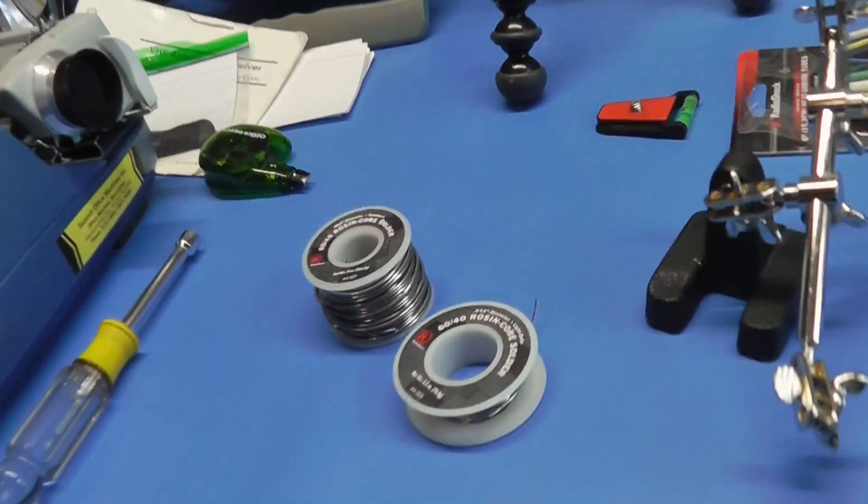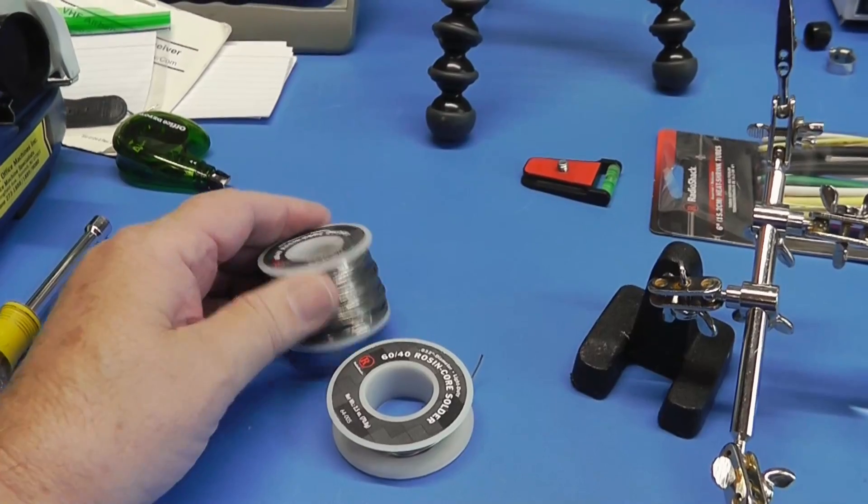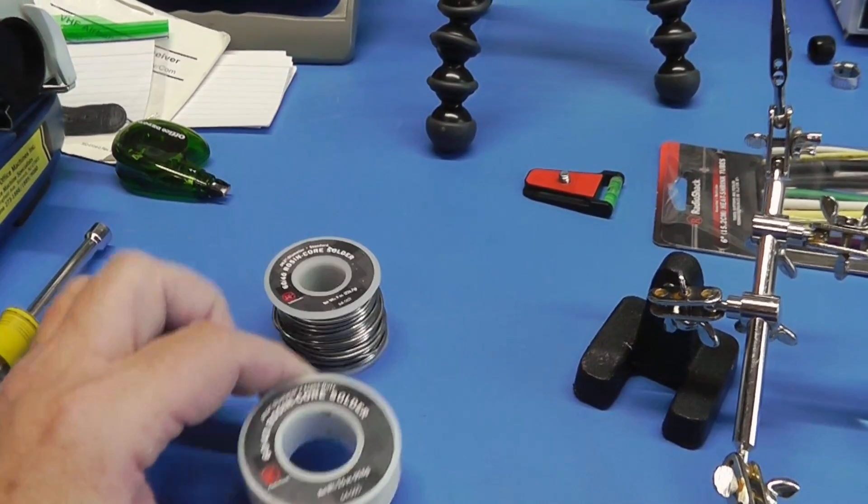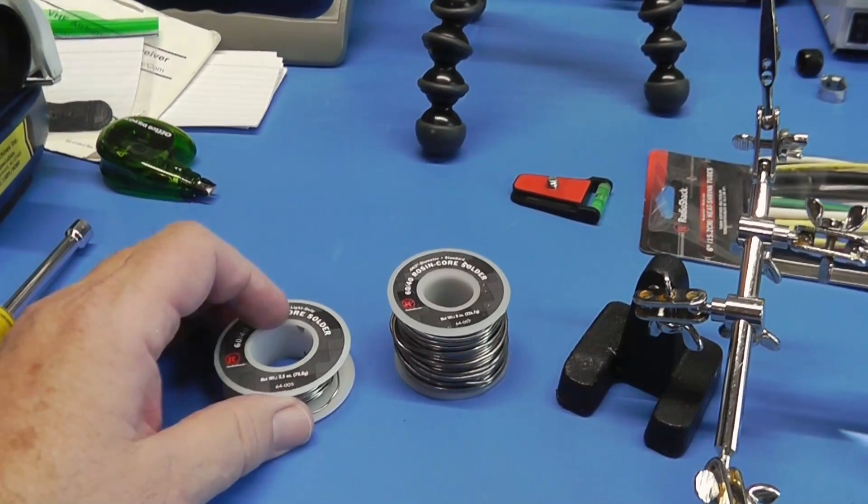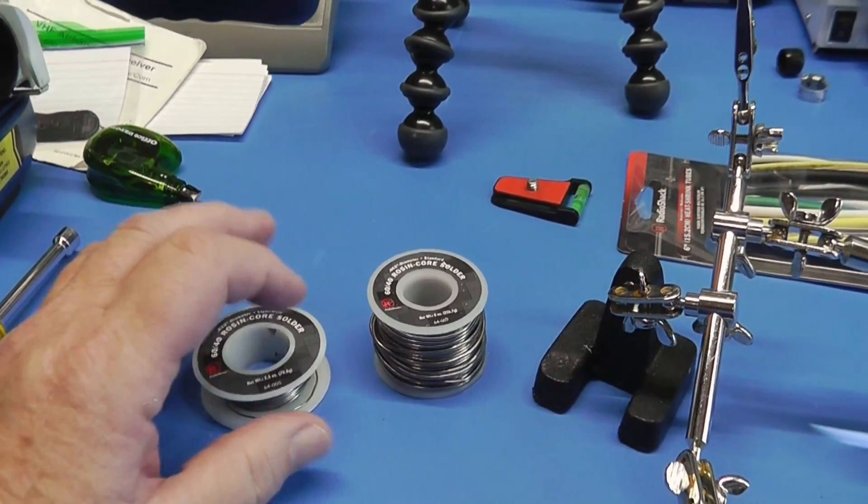Okay, here is the equipment I have assembled. I've got solder. This is both 60-40 from Radio Shack. This is thicker. This is thinner. The thinner stuff is good for circuit board work.